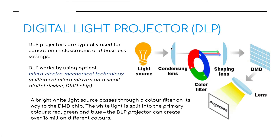How does it work? DLP projectors are typically used for education in classrooms and business settings. The DLP works by using optical micro-electro-mechanical technology — millions of micro-mirrors on a small digital device known as a DMD chip. A bright white light source passes through a color filter on its way to the DMD chip, where the white light is split into the primary colors red, green, and blue. The DLP projector can create over 16 million different colors coming through the lens.